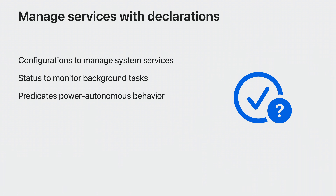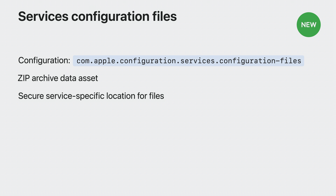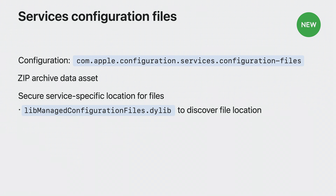Let's examine how this is implemented. A declarative device management configuration has been added to support managing system service configuration files. The configuration references a data asset that provides a zip archive. When the configuration is activated, the archive is downloaded and expanded into a tamper-resistant service-specific location. This location can be programmatically found by calling a function in a new library, so that any system service can adopt managed service configuration files. Built-in system services will be modified to look for managed service configuration files and always use those ahead of any default or overridden system configuration. Third-party services can also adopt managed service configuration files in the same manner.